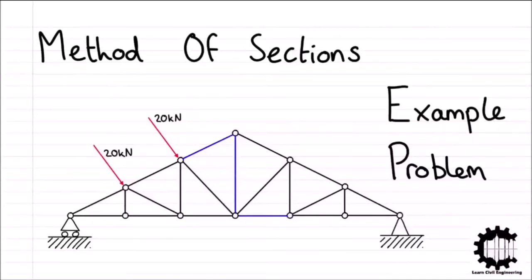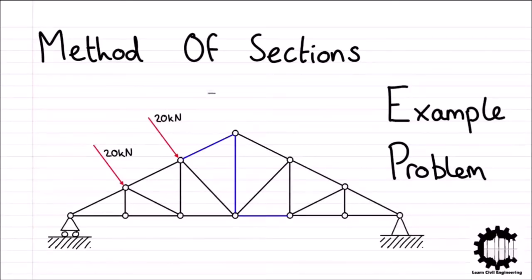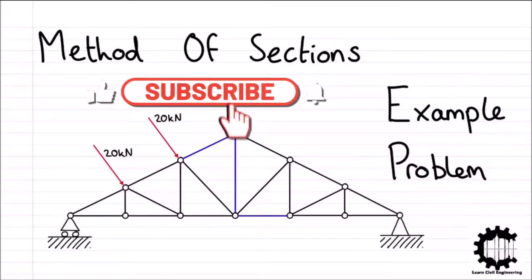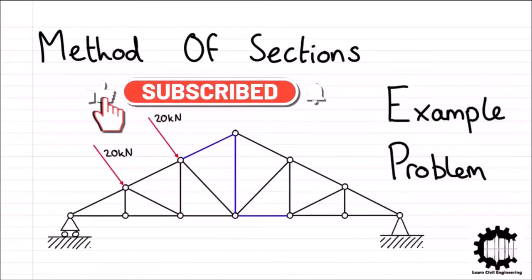In this video, we solve the following example problem: calculating the forces in the highlighted members within this HAL roof truss, and we also determine whether each of these members is under tension or compression. This is Learned Civil Engineering, where we combine theory with example problems to make engineering concepts engaging and easy to understand.